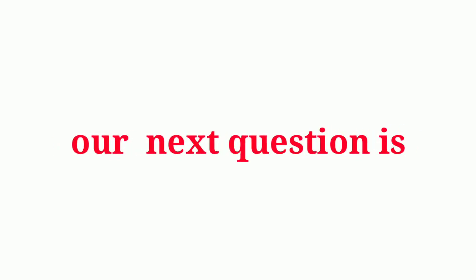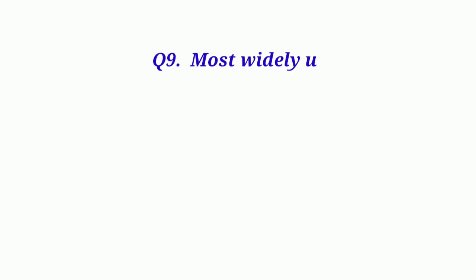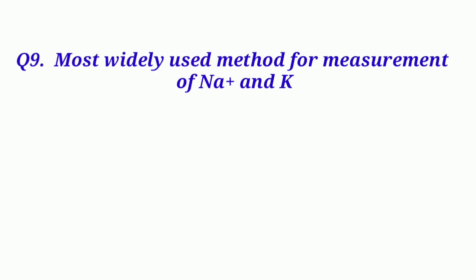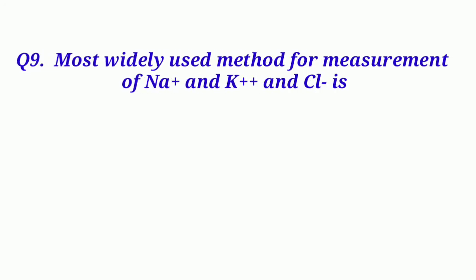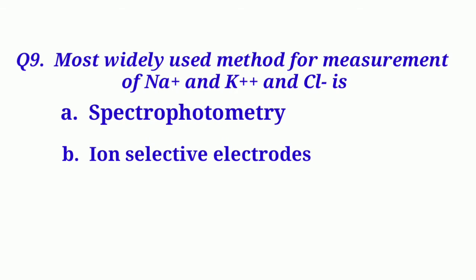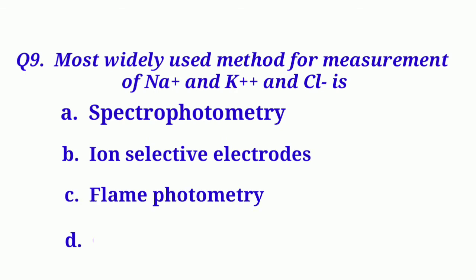Our next question is: The most widely used method for measurement of sodium ion, potassium ion, and chloride ion is. Option A: Spectrophotometry. Option B: Ion-selective electrodes. Option C: Flame photometry. And Option D: Chlorometry.